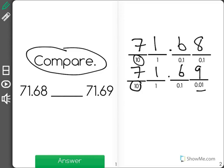So in the tens place, we both have 7, there's no difference. The ones place both has 1, again no difference. Tenths place both has a 6, no difference.